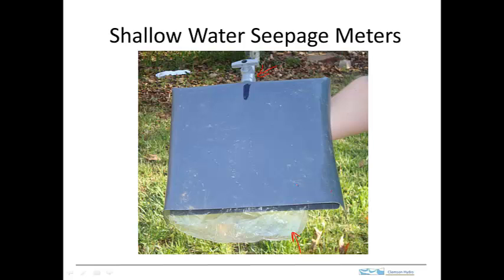This collection bag is a fairly important component of the overall system. The collection bag needs to be strong, yet very flexible. If it's a thick walled plastic, like a very heavy gauge polyethylene, then the resistance to inflating that bag is enough to cause water to flow around the seepage meter, and that's enough to affect the flow. A student of mine did a paper on this a number of years ago, and it can really be a fairly significant effect.